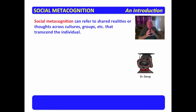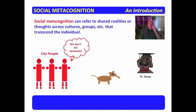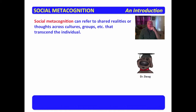Social metacognition can refer to shared realities or thoughts across cultures, groups, etc., that transcend the individual. City people might, for example, look at an aardvark and say we don't eat aardvarks. That's kind of their shared reality — they go to the grocery store, there's no aardvark meat there; they go to the restaurant, they don't serve aardvark. So they collectively make the decision that we don't eat aardvarks.